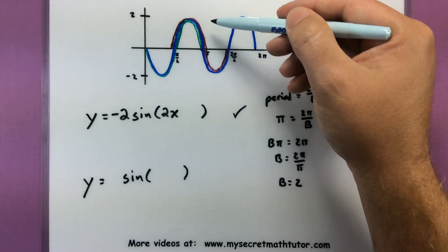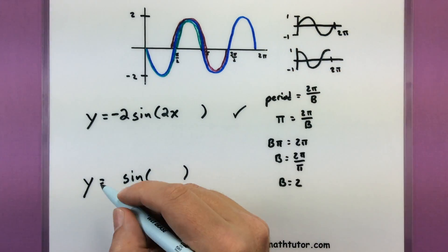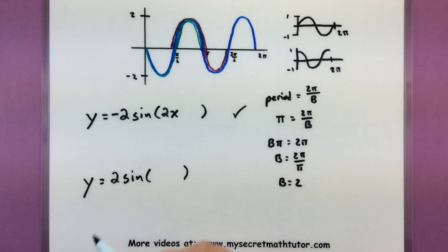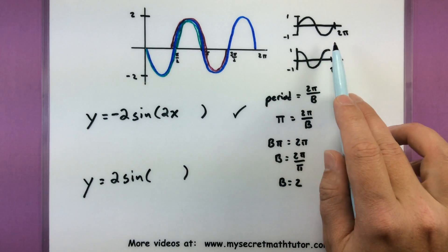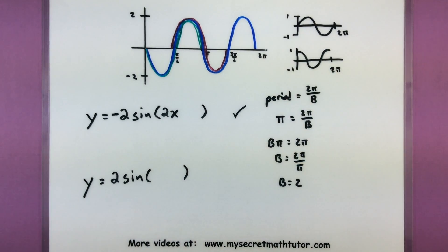The amplitude is not going to change. Still has a maximum of two, minimum of two. So we'll put a two. We'll keep it as a positive two because it's already orientated in the correct way. It hasn't been flipped over if I'm looking at just that portion.